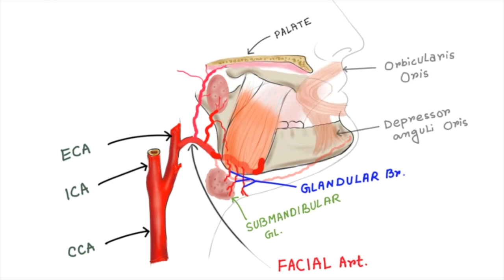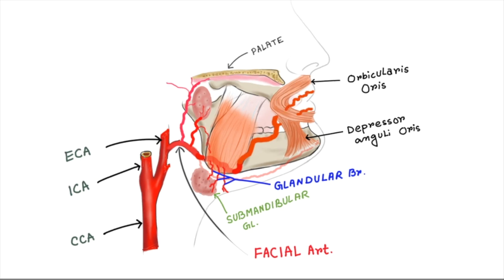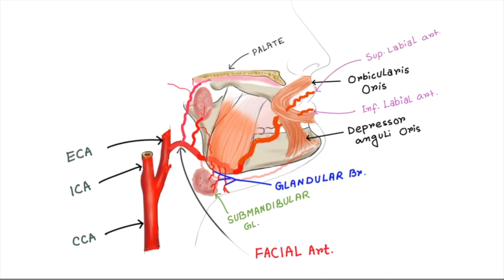Here I have drawn two important facial muscles: orbicularis oris and depressor anguli oris. From the antero-inferior angle of the masseter muscle, the facial artery passes forward and upward across the cheek and angle of mouth area, where it gives two branches: the superior labial artery and the inferior labial artery.